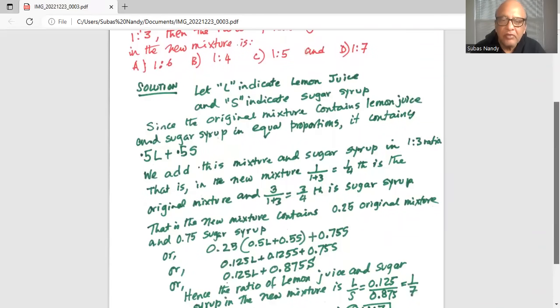That is, the new mixture contains 0.25 parts of original mixture and 0.75 parts of sugar syrup. So it contains 0.25 in parenthesis, the original mixture content, equal quantities of lemon and sugar syrup.